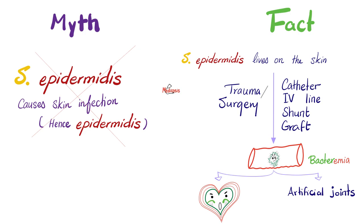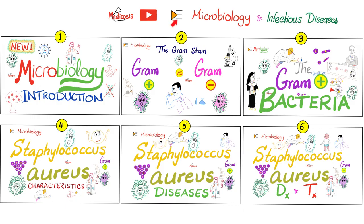And then it can reach target organs like the heart, like artificial joints. It will use its slime layer to attach to either one, causing symptoms. It can cause endocarditis. It can cause failure of the mechanical joint.